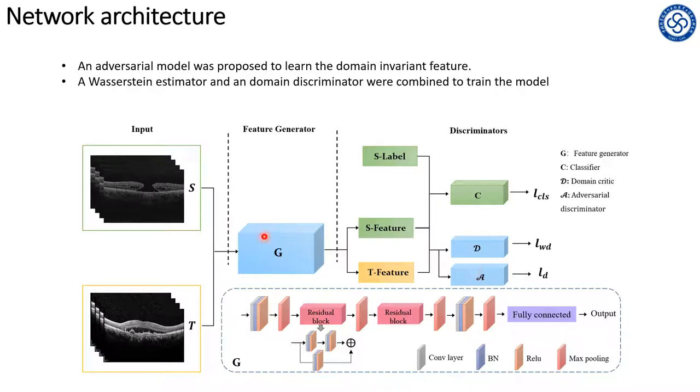The generator is optimized to minimize estimated discrepancy. The generator and the discriminator are trained in an adversarial manner and the classifier is trained to detect retinopathy.